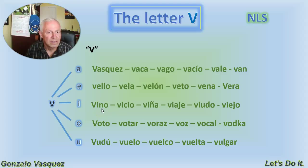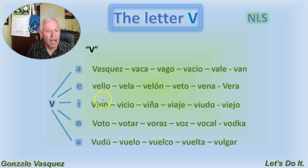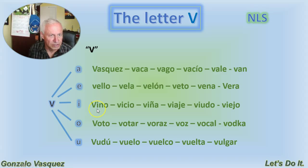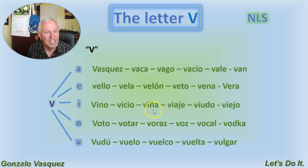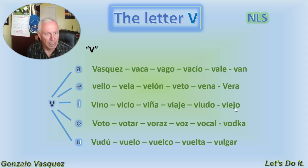La ve con la I will be vi. Vino is wine. And this is one of the few times where you can have two meanings — vino is also from the verb venir, past tense, first person. We'll talk about that in the future. For now, let's leave it with wine: vino. Vicio is an addiction. Viña is like a farm where they grow all the grapes for the wine. Viaje is like a trip. Viudo is a widower.